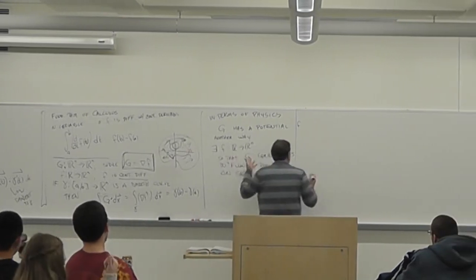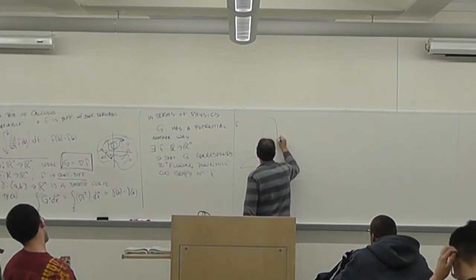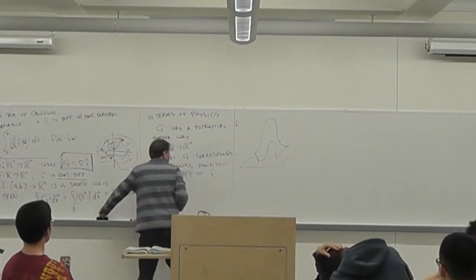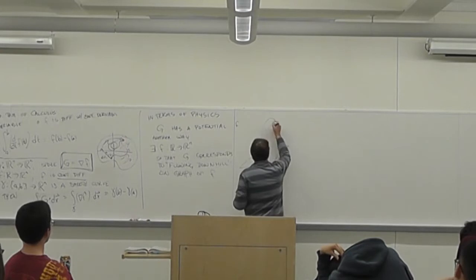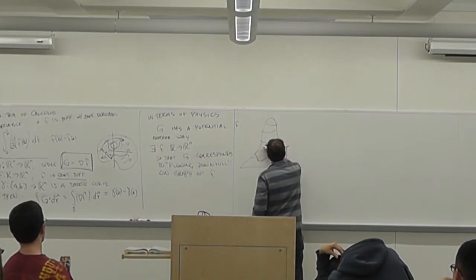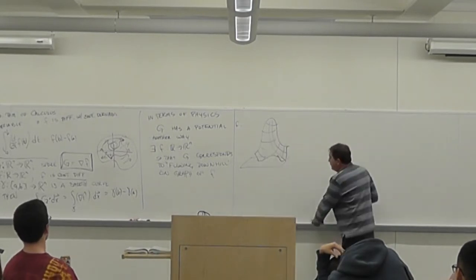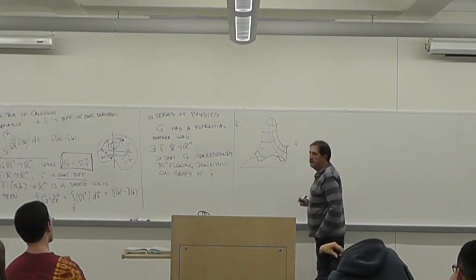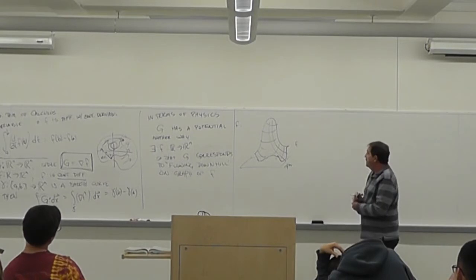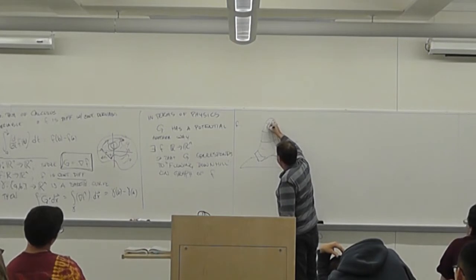That is, there's some function that it represents, or there's some sort of conserved quantity here. It has a potential — let's call it f. There exists some function f from R^n to R, so that g corresponds to flowing downhill on the graph of f. So I can think of my vector field g: if I take some surface — maybe it has some bumps and some hills and some valleys — this is my graph of f, this is my R^n here. And g corresponds to the gradients — how water would move if I pour water on this surface.